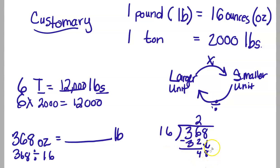16 goes into 48 three times. Let's try that out. 3 times 16 is 48. Yes, that works. And I have 0 left over. So I can see that 368 divided up into groups of 16 will give me 23 pounds.